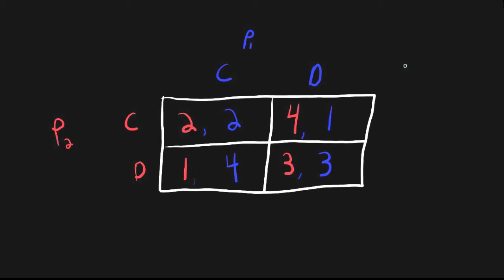First we'll list out what are all the possible joint profiles. They can either both confess (CC), player one can confess and player two doesn't confess, player one doesn't confess and player two confesses, or both players don't confess.